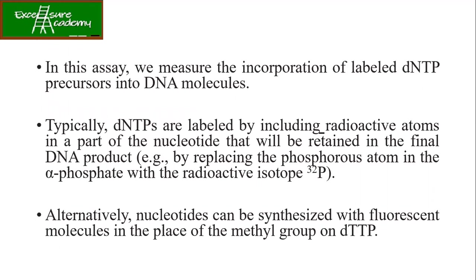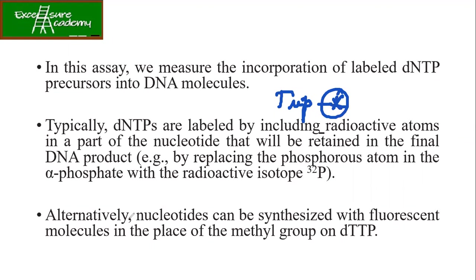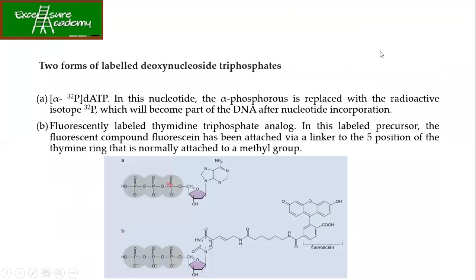In this assay, we measure the incorporation of the labelled dNTP precursor into the DNA molecules. As your DNA is getting synthesized, new dNTPs are getting incorporated, and these are labelled by radioactive atoms — specifically the radioactive isotope P32. DNTPs are triphosphate, and us mein se ek phosphate ko label kar denge. Alternatively, nucleotides can be synthesized with fluorescent molecules in the place of the methyl group on dTTP. So either you can label your phosphate group or you can have the fluorescent methyl group — these are the two ways to measure the activity.